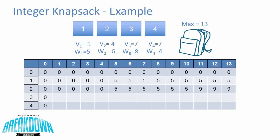You can see the pattern: we base our decision on the current item on what we decided for the previous item, and this snowballs until we've made decisions for all items. I'm going to fill in the rest of the table — if there are any questions, leave them in the comments, but you can pause and take a look at what we've done.